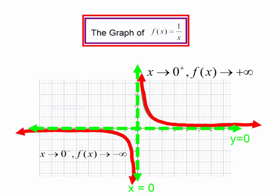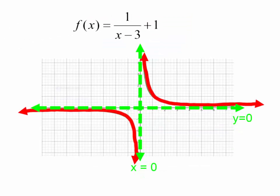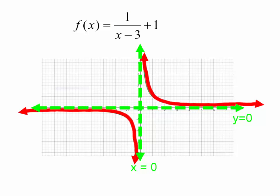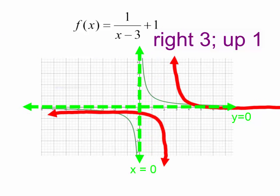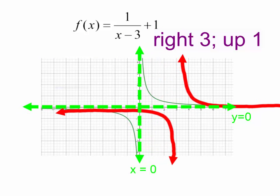Now let's graph f of x equal to 1 over x minus 3 plus 1. We talked about shifts in a different video. This x minus 3 makes it shift right 3, and the plus 1 is the vertical shift — it makes it go up 1. So we are going to go right 3 and up 1.